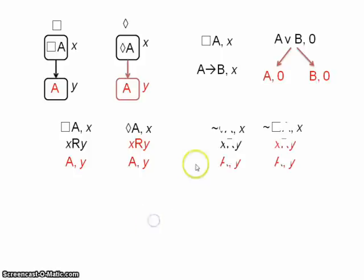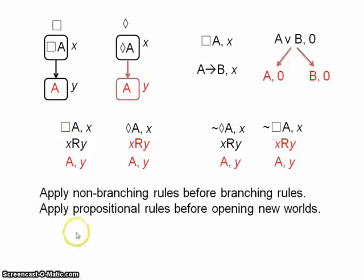So quite simple there. The equivalences between necessarily not and not possibly, and also between not necessarily and possibly not, all those remain, which means we can add these rules, just as we did for our previous tree method. Remember, we're not really changing any rules here. We're just changing the notation. So these are our four rules for our modal operators, and it's all exactly the same as it was last time. We're just using a different kind of notation.